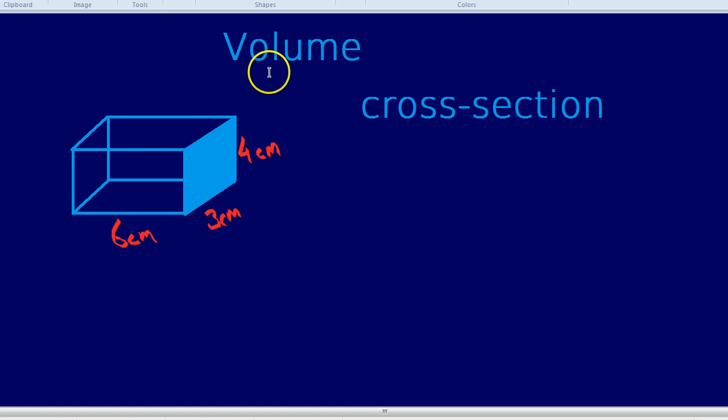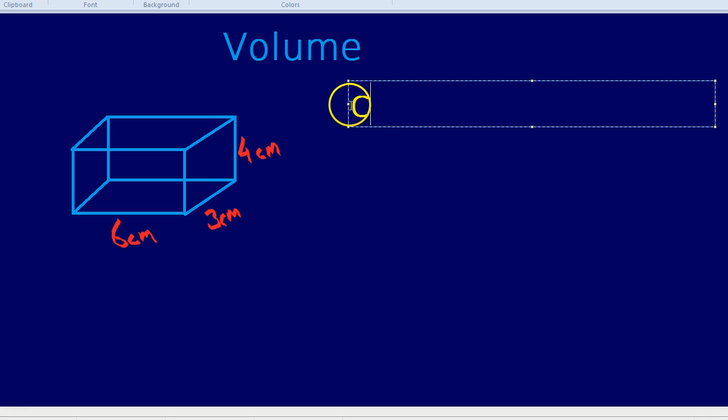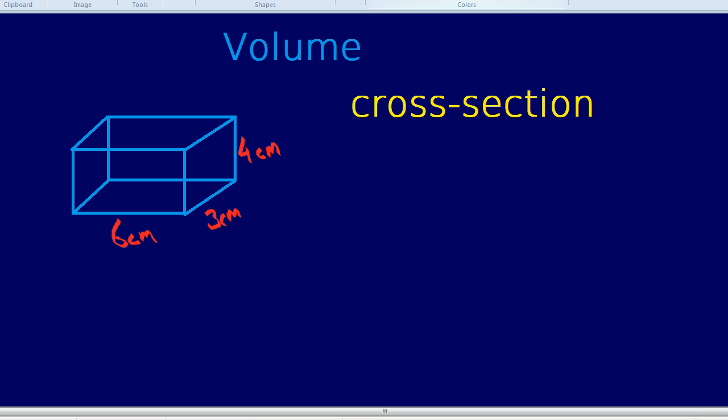And actually there is another cross-section you could have taken, which would be here, so the front bit, which goes all the way through from the front to the back of the shape. So that would also be a cross-section. So both of those could be cross-sections, but what we're going to do is we're just going to take the right to left cross-section.